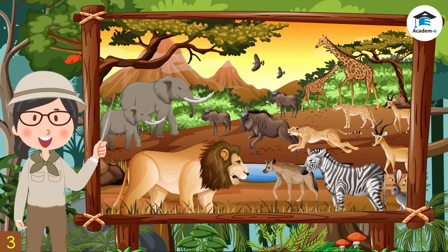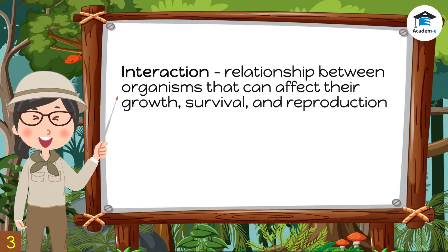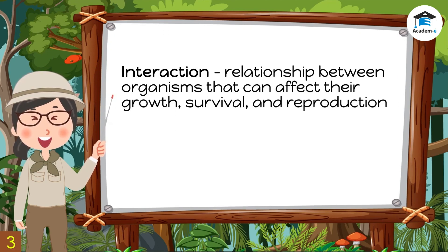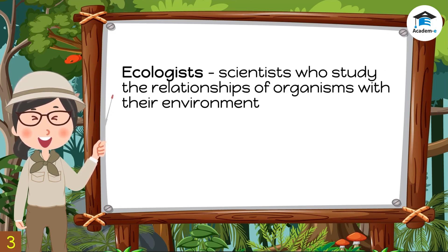Analyze the picture shown. Can you describe the interactions that happen between these animals? An interaction is a relationship between organisms that can affect their growth, survival, and reproduction. Interactions may be expected of organisms that belong to the same species but is also demonstrated by organisms of different species. Ecologists, or scientists who study the relationships of organisms with their environment, classify these relationships in terms of how they benefit or harm the species of organisms involved in the interactions.